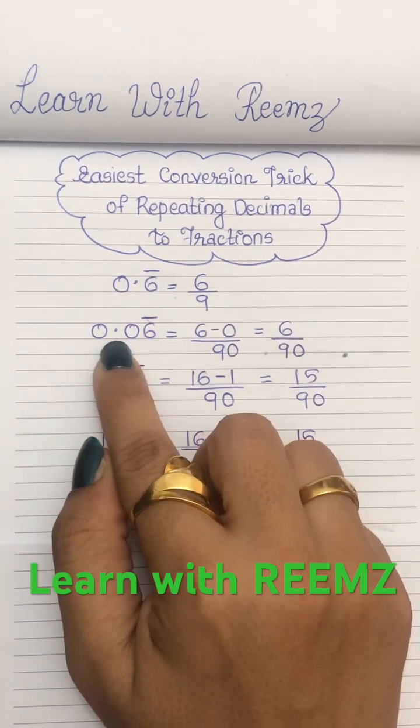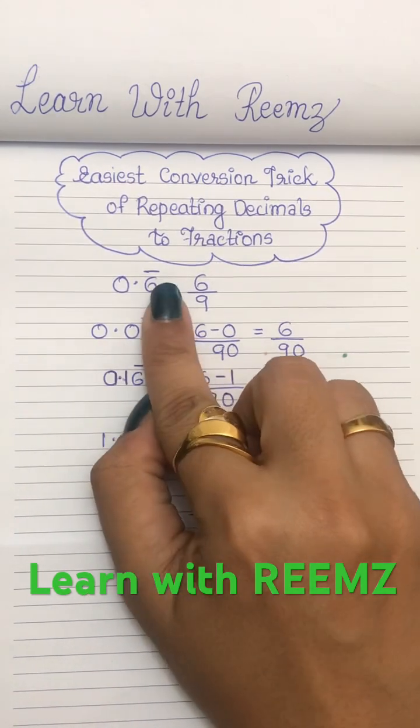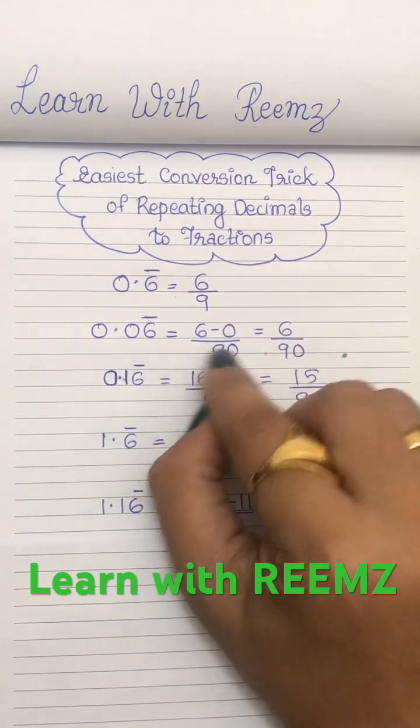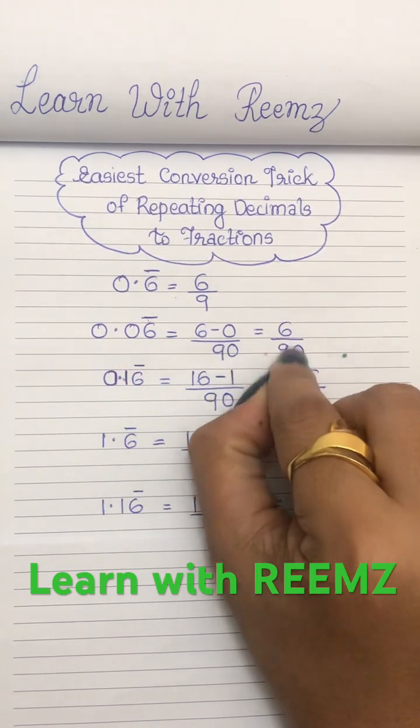The next one is 0.06 bar. Here without the decimals, the number is 6. And covering the repeating term, we have 0. So 6 minus 0 divided by only one repeating term, so 9. And one non-repeating term, so 0. So 6 by 90.